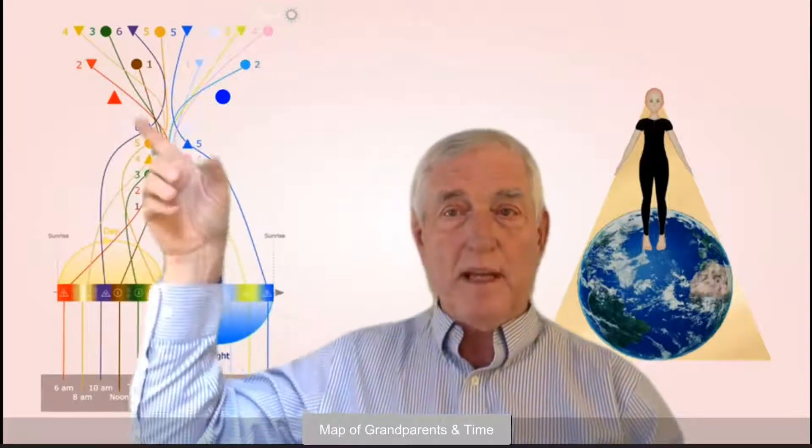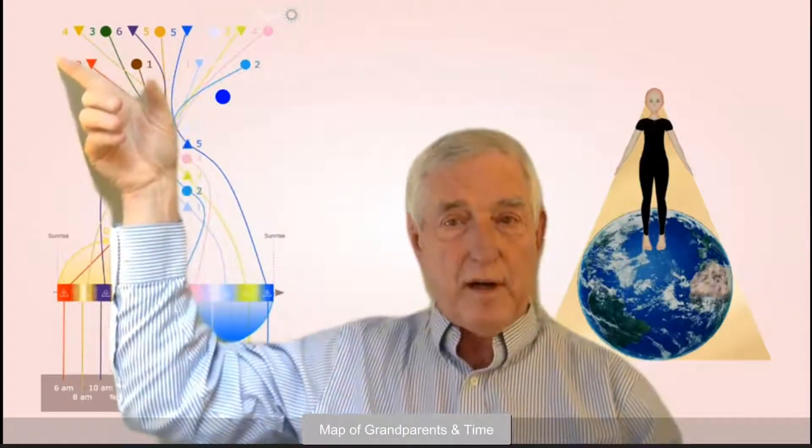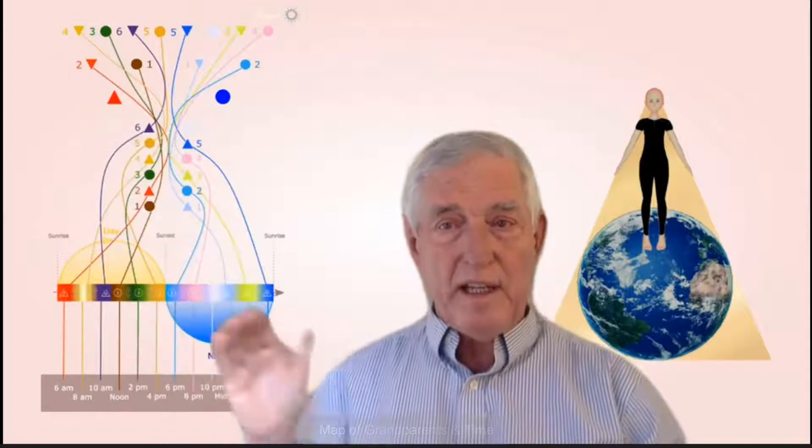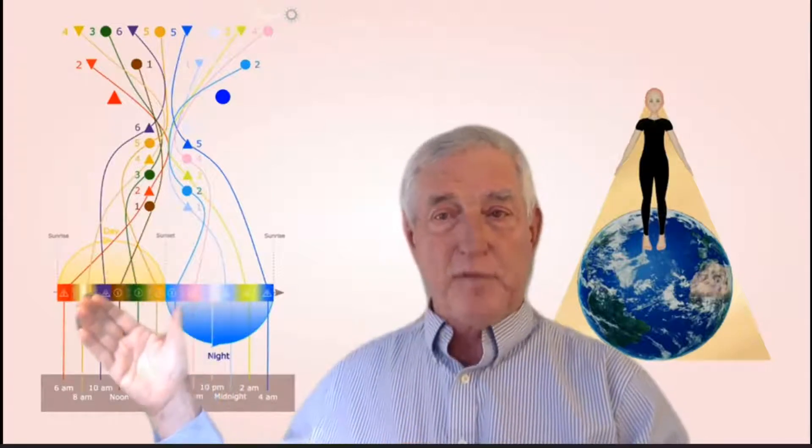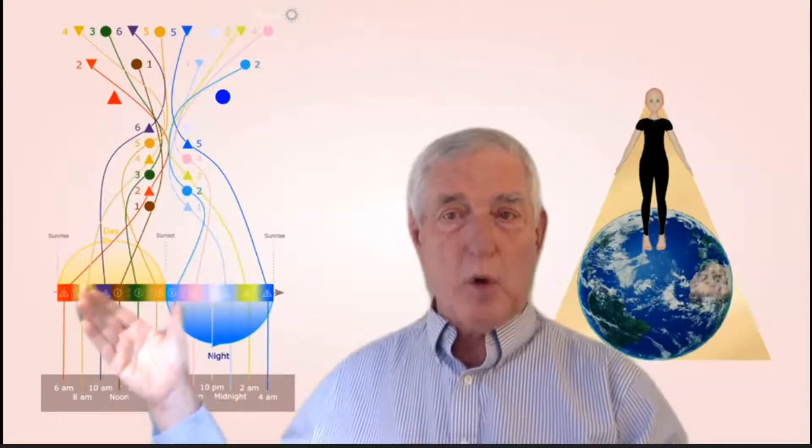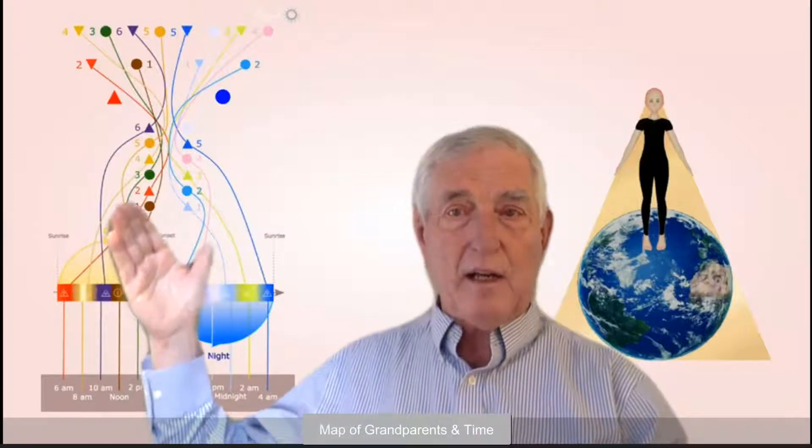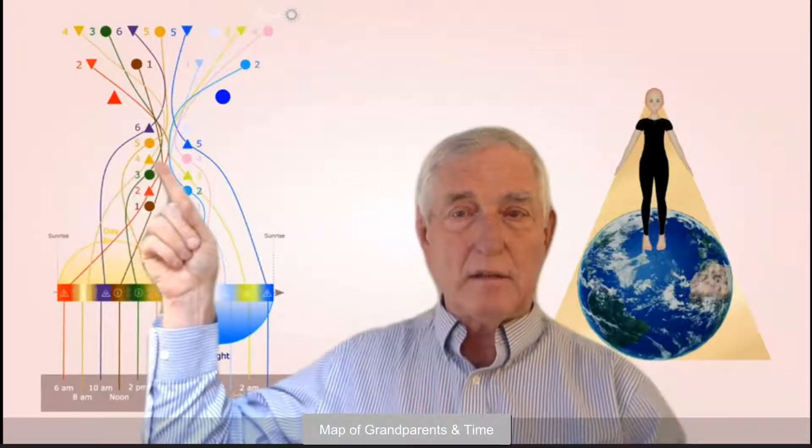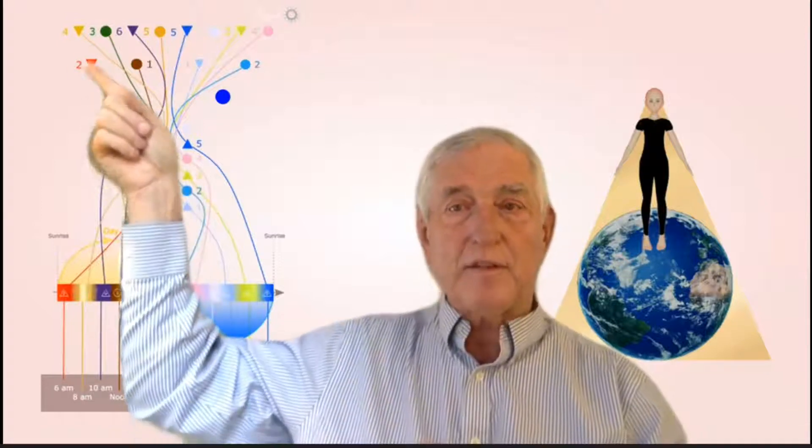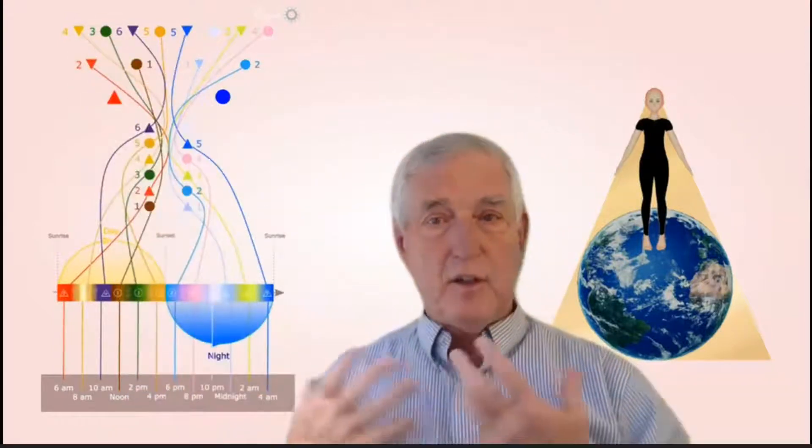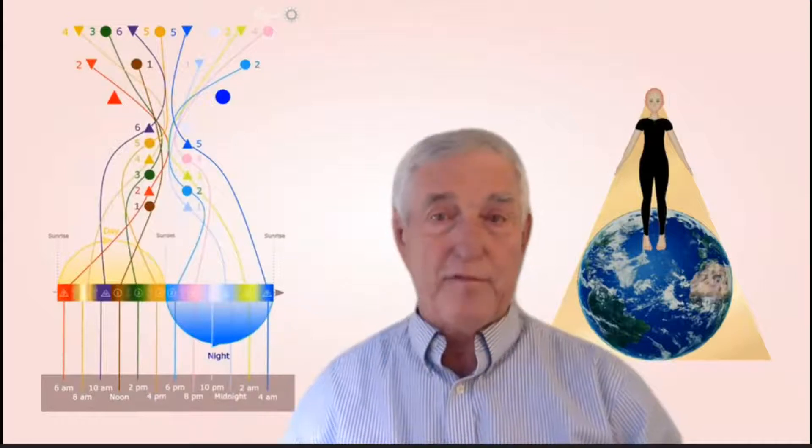Now each one of these follows the same design. So for example, the next one is the 4 boy hour, that's the gold. Follow that line, it goes up to the triangle gold number 4. You follow that line, it goes up to father's father's father, the great grandfather number 4.